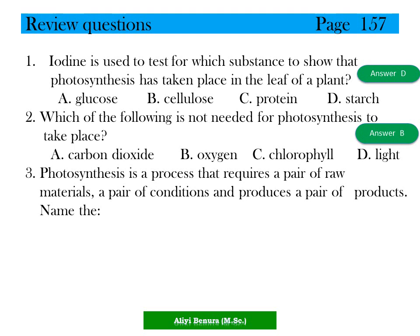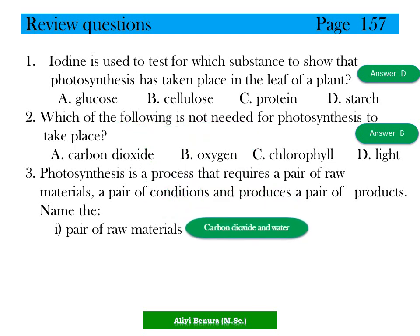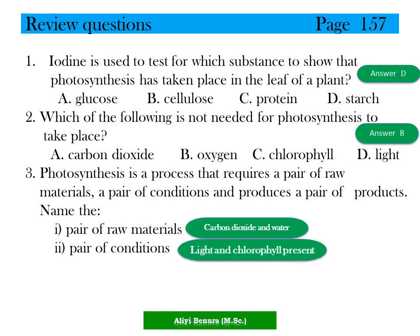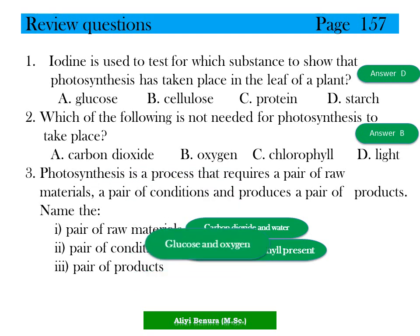Question 3: Photosynthesis requires a pair of raw materials and a pair of conditions, and produces a pair of products. The pair of raw materials are carbon dioxide and water. The pair of conditions are light energy and the presence of chlorophyll. The pair of products are glucose and oxygen.